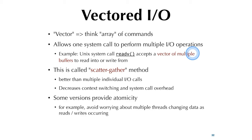Vectored I/O, also called the scatter-gather method, batches multiple I/O operations into one system call. This eliminates repeated mode switching between user mode and kernel mode, and saves unnecessary context switching. You also want atomicity — you don't want the batch done halfway. If you make a vector I/O call, you want all operations to execute to completion before being notified. It's all or nothing.